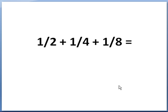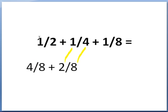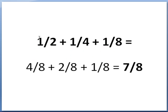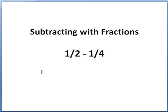Let's take a look at 1 half plus 1 quarter plus 1 eighth. The denominators are not the same, so I find the least common denominator — in this case, 8, the smallest number they all fit into. 4 will go into 8 two times, so 1 quarter becomes 2 eighths. 2 will go into 8 four times, so 1 half becomes 4 eighths. Then: 4 eighths plus 2 eighths plus 1 eighth. Adding: 4 plus 2 is 6, plus 1 is 7, giving 7 eighths.